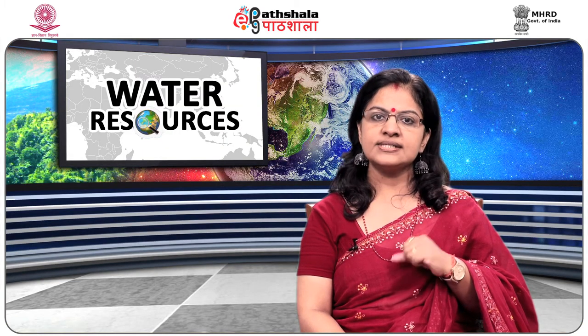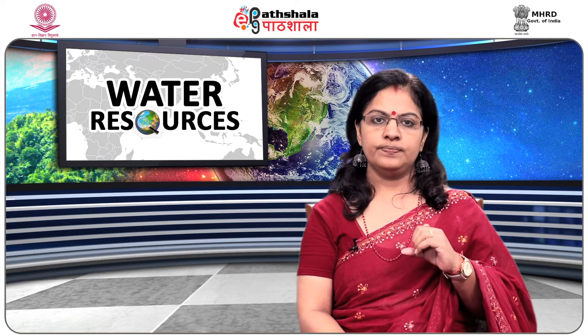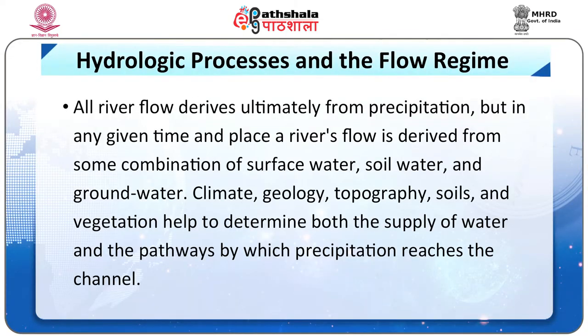All river flow derives ultimately from precipitation. But at any given time and place, a river's flow is derived from some combination of surface water, soil water, and groundwater. Climate, geology, topography, soils, and vegetation help to determine both the supply of water and the pathways by which precipitation reaches a channel.